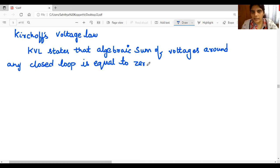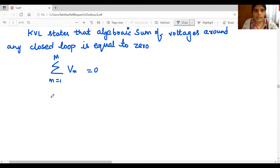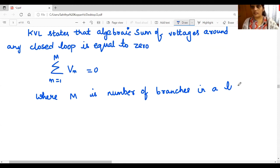So mathematically it is represented as sigma, M is equal to 1 up to M, VM is equal to zero, where M is number of branches and VM is Mth voltage.